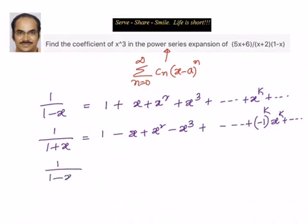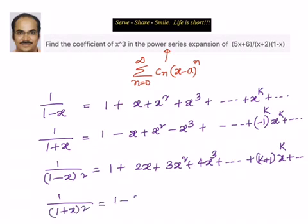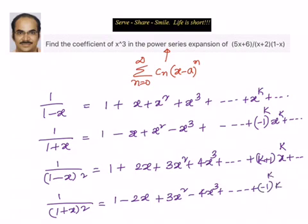Similarly, 1 by 1 minus x whole square is given by 1 plus 2x plus 3x squared plus 4x cube, and the k-th term is (k plus 1) into x to the power k. For 1 by 1 plus x whole square, it alternates: 1 minus 2x plus 3x squared minus 4x cube, and the k-th term is minus 1 to the power k into (k plus 1) into x to the power k. We will leverage these expansions in our example.